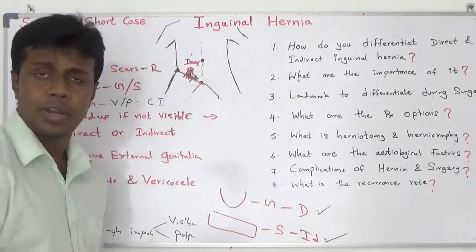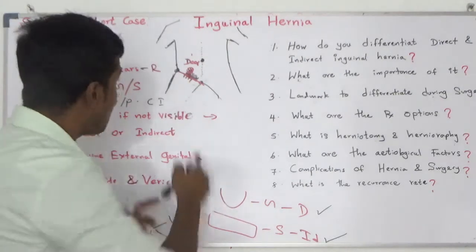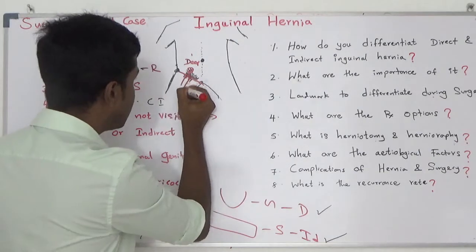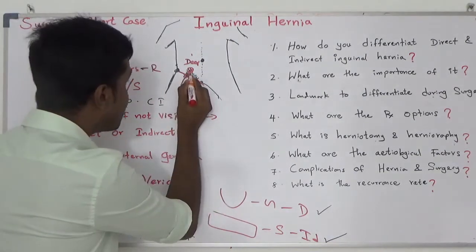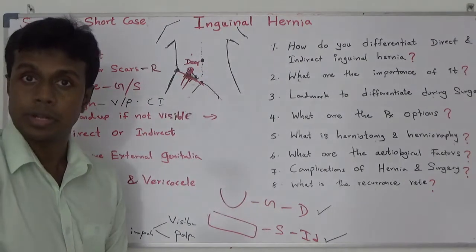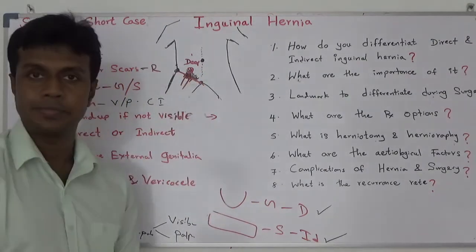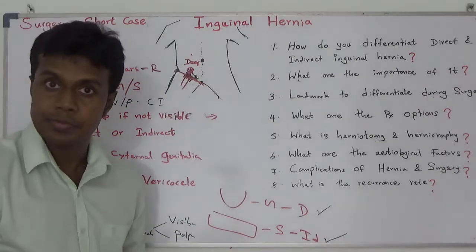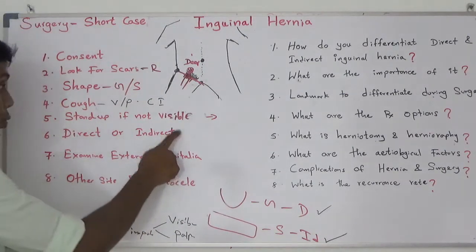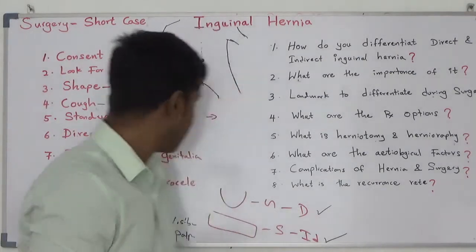There is another way to identify the deep inguinal ring. Check for the femoral artery — it is somewhere in this region. One centimeter above the femoral artery is where the deep inguinal ring is situated. Using this landmark, you can identify whether it is direct or indirect inguinal hernia.